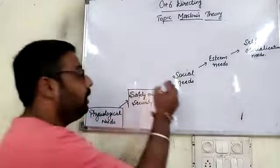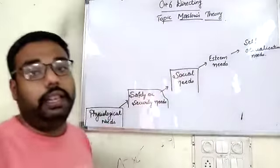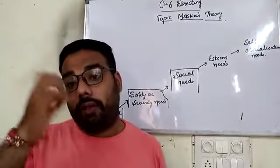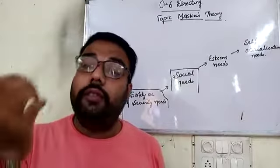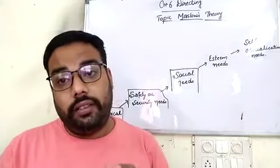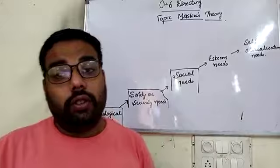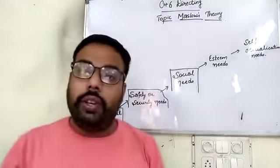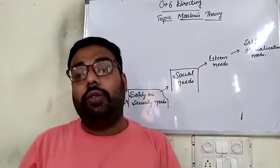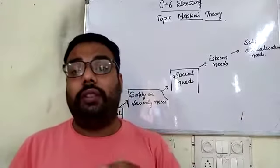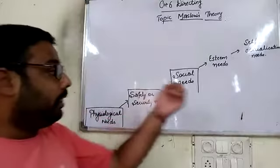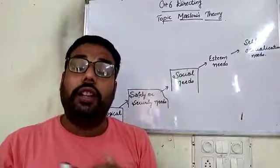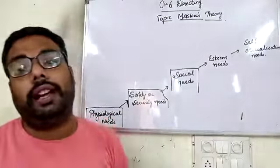After fulfilling safety and security needs, the employee moves to the next higher need — social needs. Every human being wants respect, affection, and love. Because a human being is a social animal, they also need to socialize. Social or affiliation needs motivate them — they want to belong and earn respect in society.